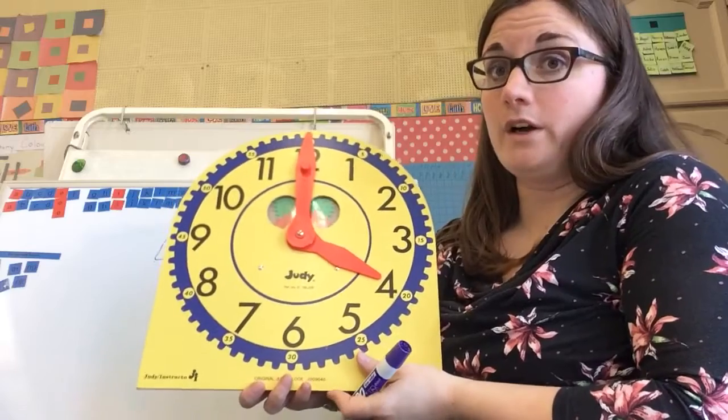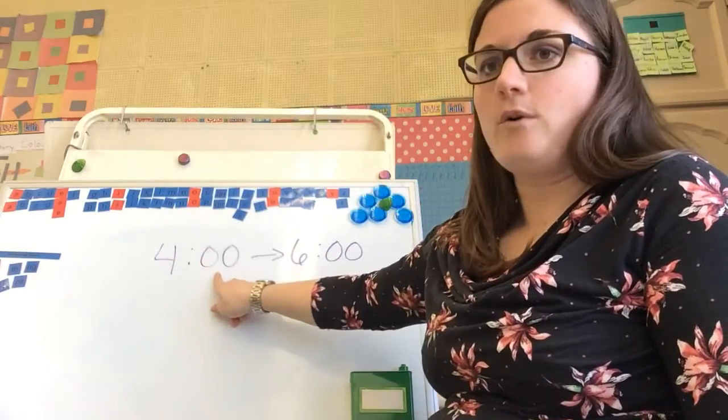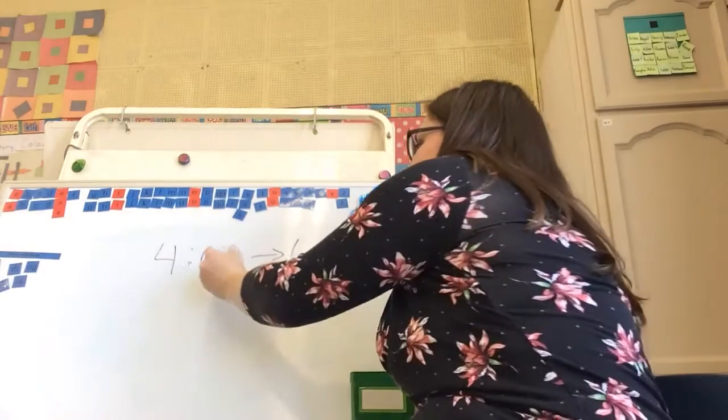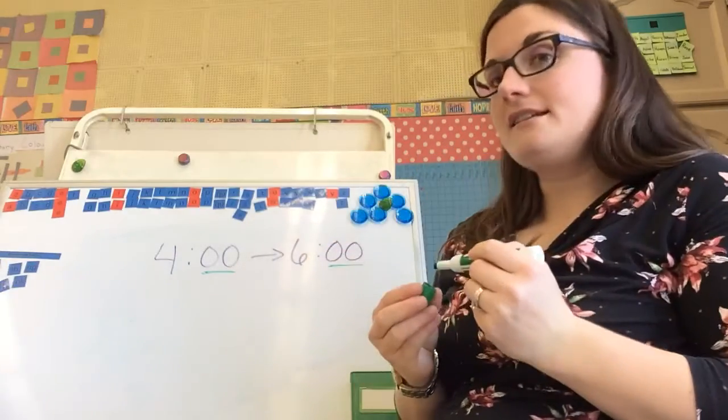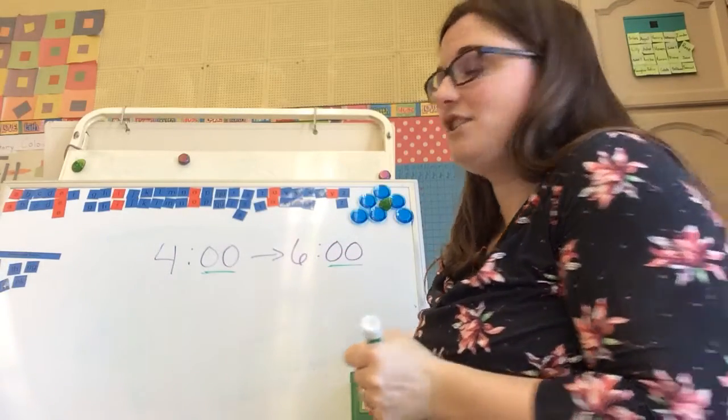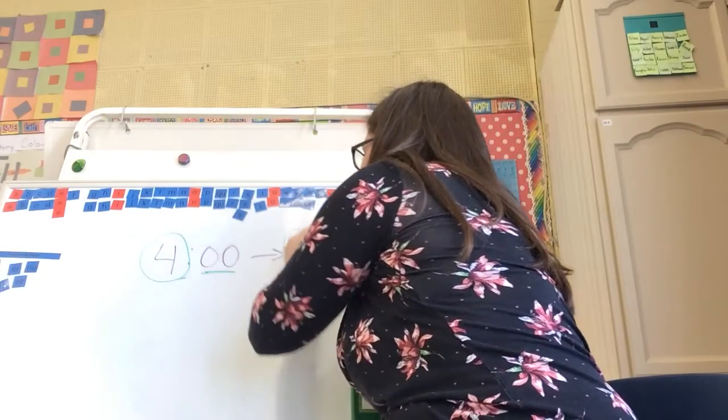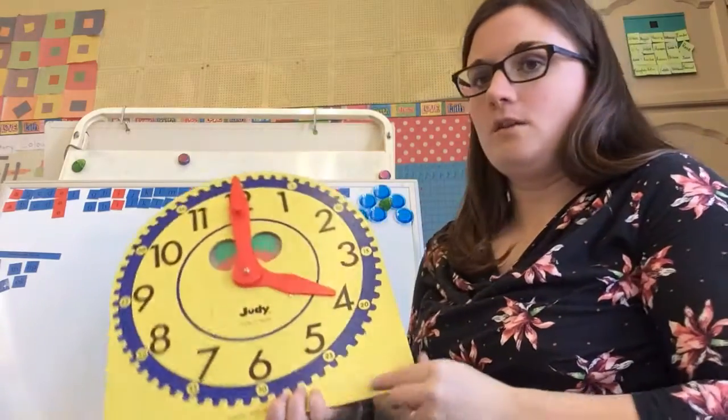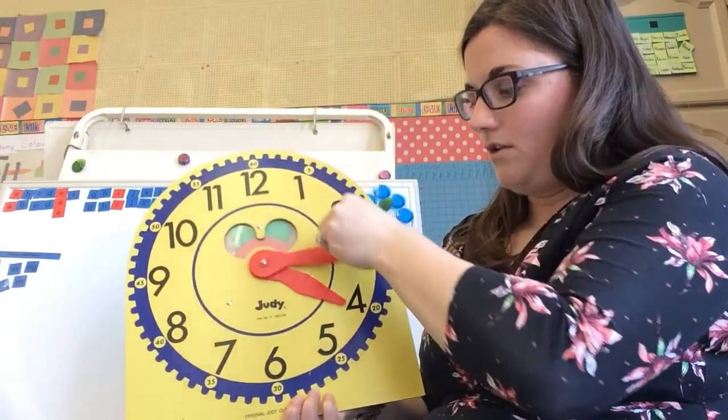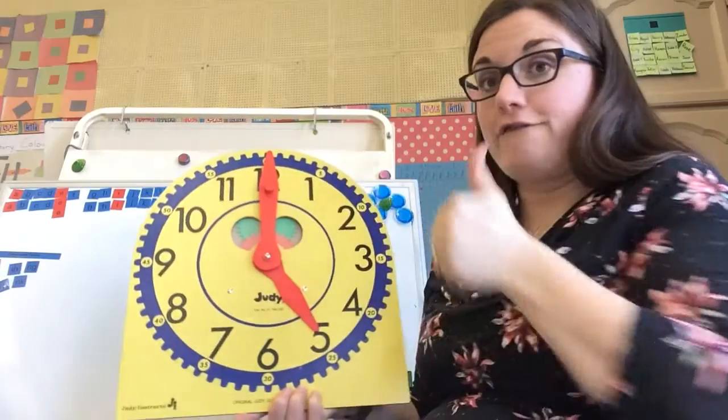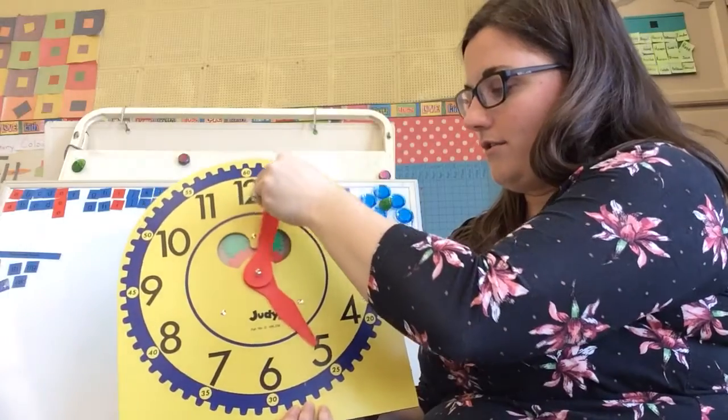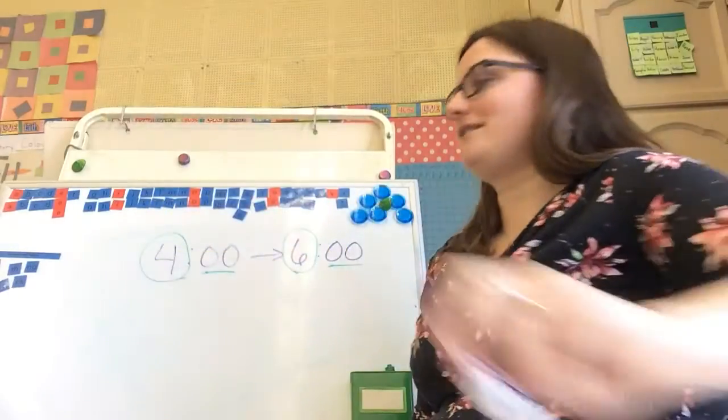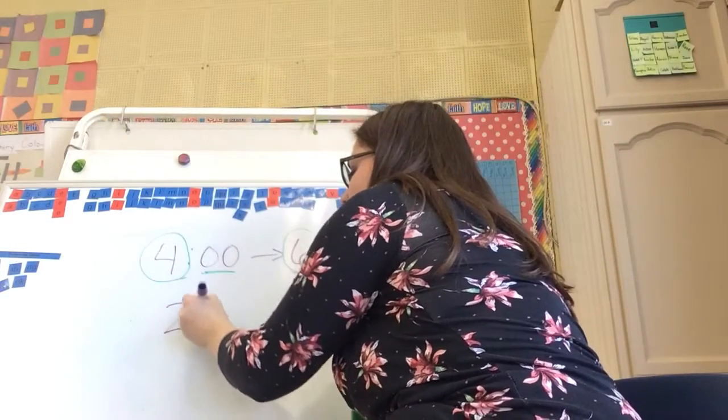We start at 4. How long does it take to get from 4 to 6? I want you to look at 4 o'clock and 6 o'clock. What do you notice about the minutes? The minutes are the same. They're not changing, but what is changing? How much time does it take to get from 4 to 6? We have 4 o'clock, all the way around to 5 o'clock is one hour, and all the way around to 6 o'clock is two hours. So two hours went by.